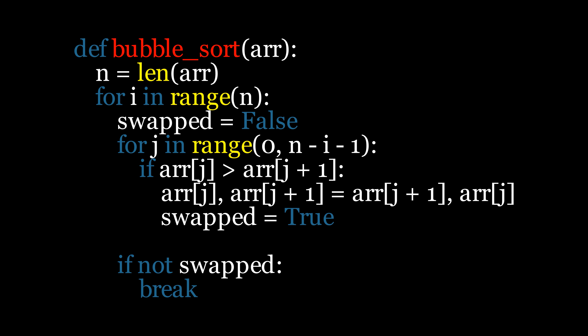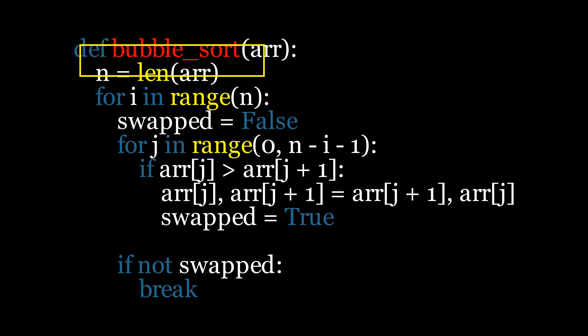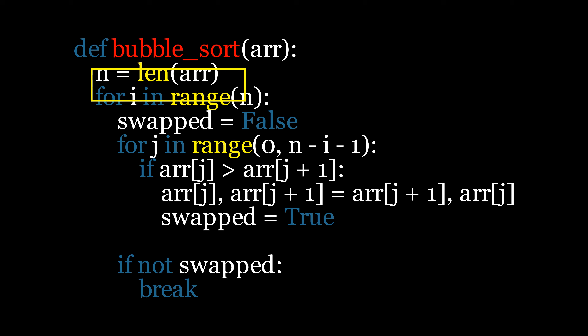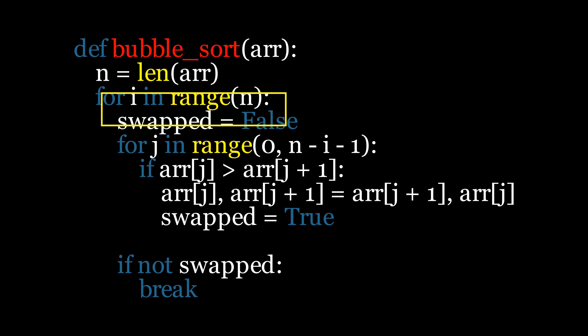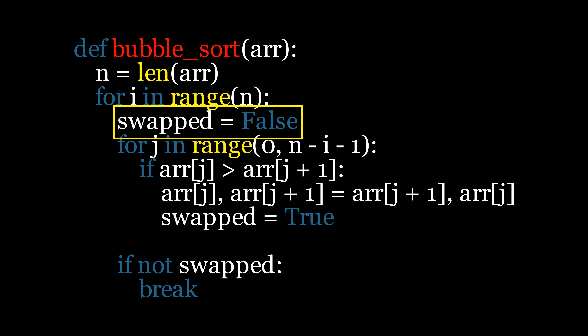Now let's go through the Python code for bubble sort. First, we define a function that takes the array as an input parameter. We store the length of the array in the variable n. The algorithm uses a loop that runs n times. Inside this loop, we use a variable called swapped to keep track of whether any swapping has occurred during the current pass.